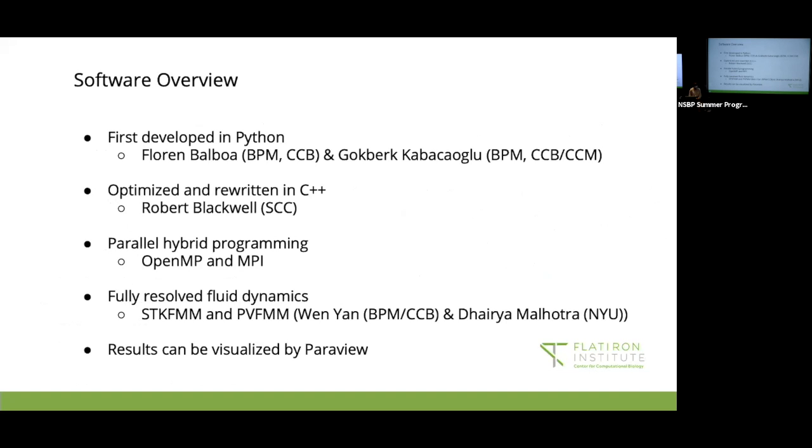So some details about the program we use. So Mike Shelley's team has been developing this for a while. It was first written in Python by Soren and Goldberg. And then later, we rewrote it in C++ by Robert. And we also use a parallel hybrid programming method where we use OpenMP and MPI at once. And so the goal, a lot of the things that we use are just to make the code run faster and have better efficiency. Because this does take a lot of computations and a lot of data and things like that. So we really want whatever is best for those type of things. We also have fully resolved fluid dynamics written by Wen and Daria. So after I run a simulation, all the information goes to the output file, then I can send this output file to Fairview where I can visualize the aster moving in the cell.